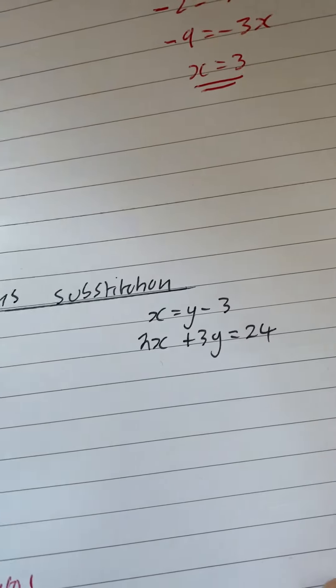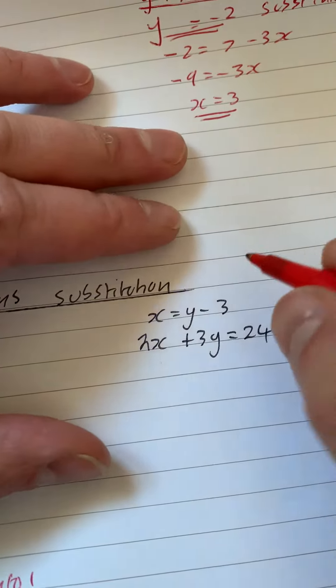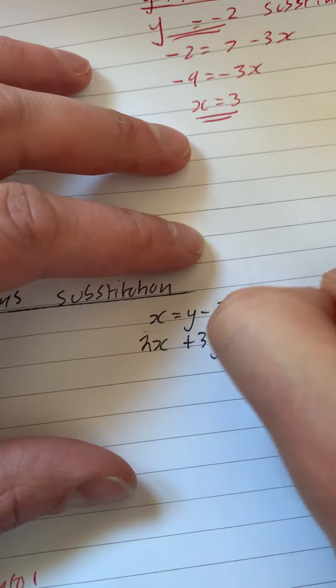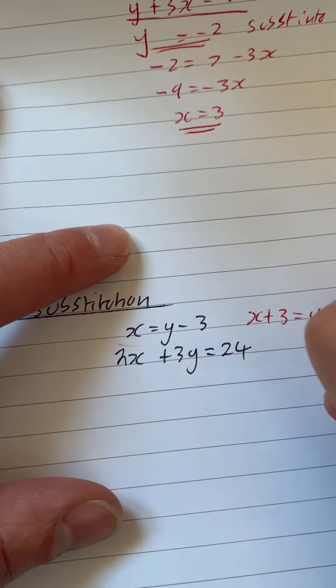Next one, substitution, but it's a little bit more tricky. We can't substitute anything in yet. So if we put this 3 over to the other side, so we've got x plus 3 equals y, we can then substitute, and I'm going to call this equation 3.